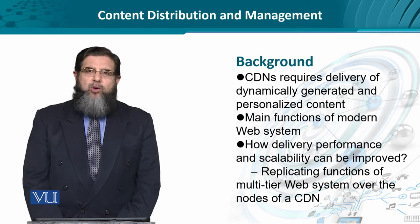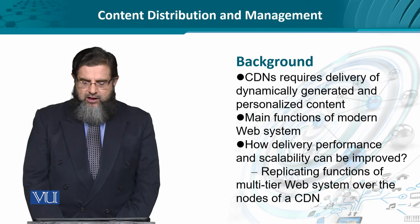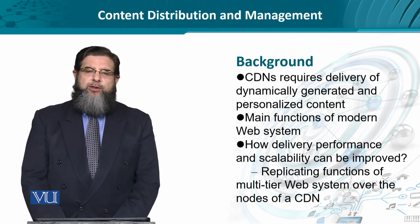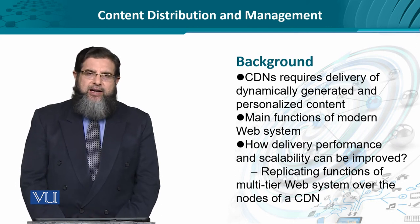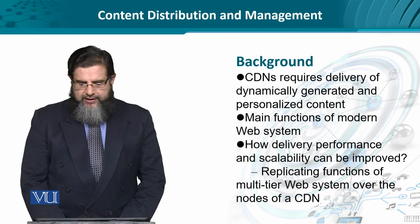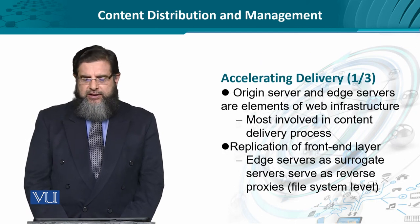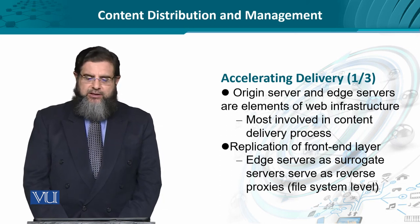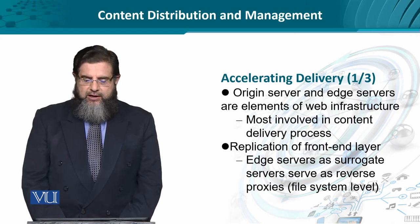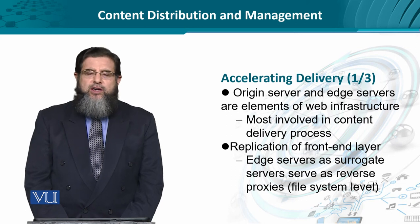We can think about the replication of the functions of the multi-tier web-based system. This is a three-tier system in which we have the front-end, the back-end, and the database over the nodes of the CDN. CDN nodes can be thought of as the origin server and the edge servers, which are part of the overall web infrastructure, physically speaking, and are involved in content delivery.